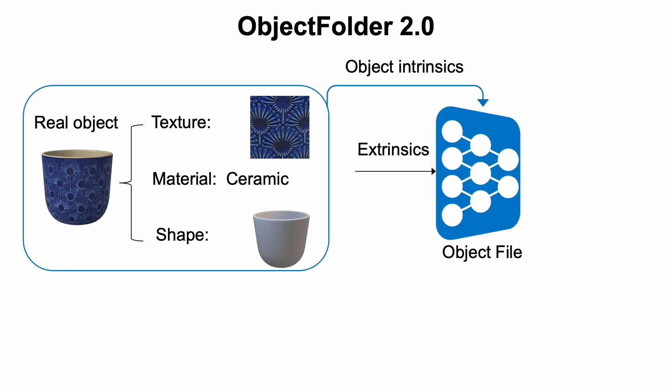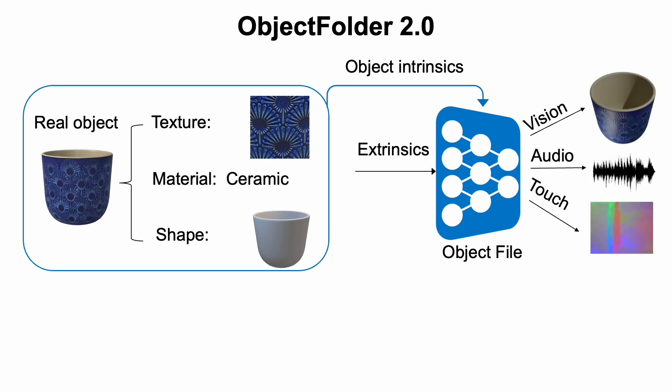By querying with the corresponding extrinsic parameters, we can obtain the visual appearance of the object from different views and lighting conditions, impact sounds of the object at each position, and tactile readings of the object at every surface location, respectively.